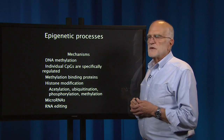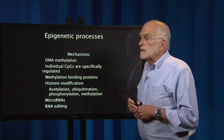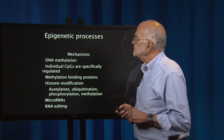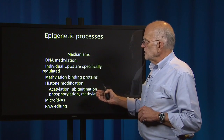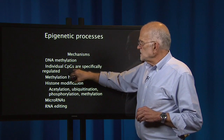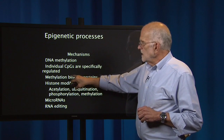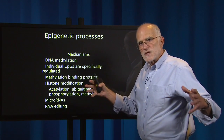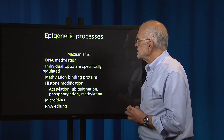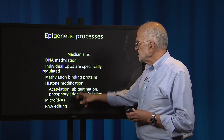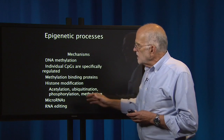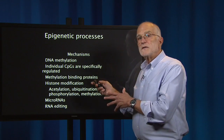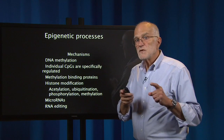What are the mechanisms that might mediate such effects? They have to be epigenetic, because this is not dependent upon the genotype of the patient — it's dependent upon the environmental experience of the patient. Those mechanisms include DNA methylation, where individual nucleotide sequences are specifically regulated via methylation binding proteins. There can also be histone modification, which is a broader-scale turning on or off of sets of genes, mediated by acetylation, ubiquitination, phosphorylation, and methylation. MicroRNAs and RNA editing can also be involved in these epigenetic processes, though we do not yet know which mechanisms are responsible for precisely which reactions.